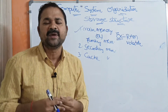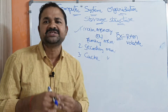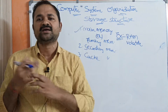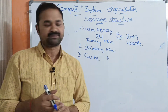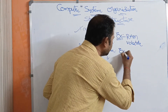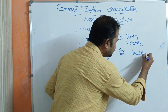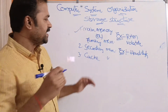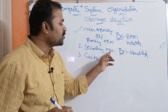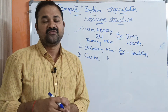Now let us see about secondary memory. Secondary memory is mainly useful in order to store data or programs permanently in the computer. Secondary memory is useful for backup purposes. The best example for secondary memory is hard disk.